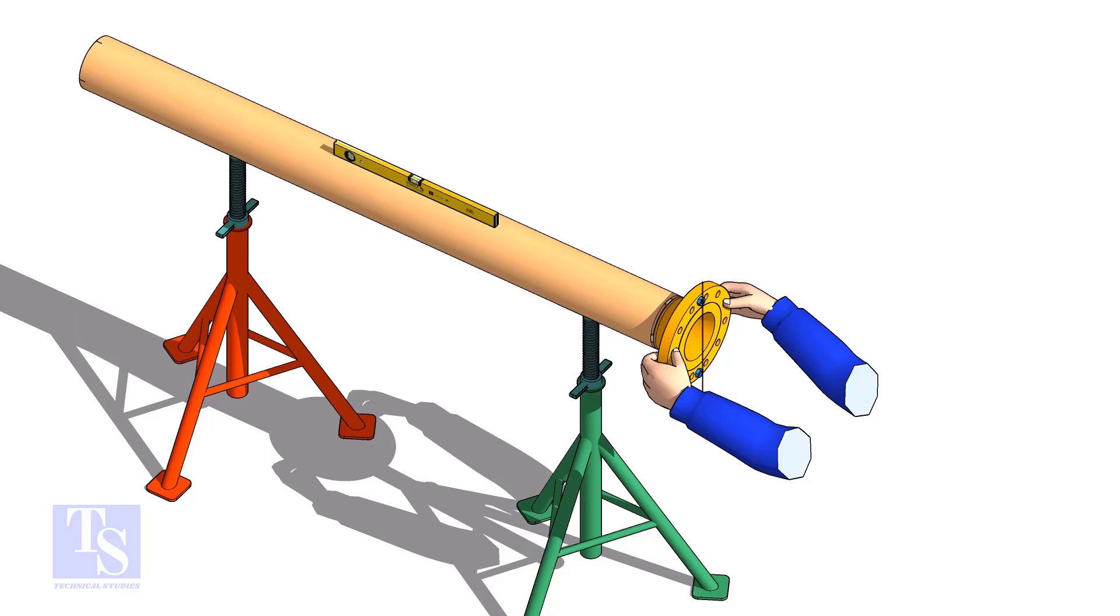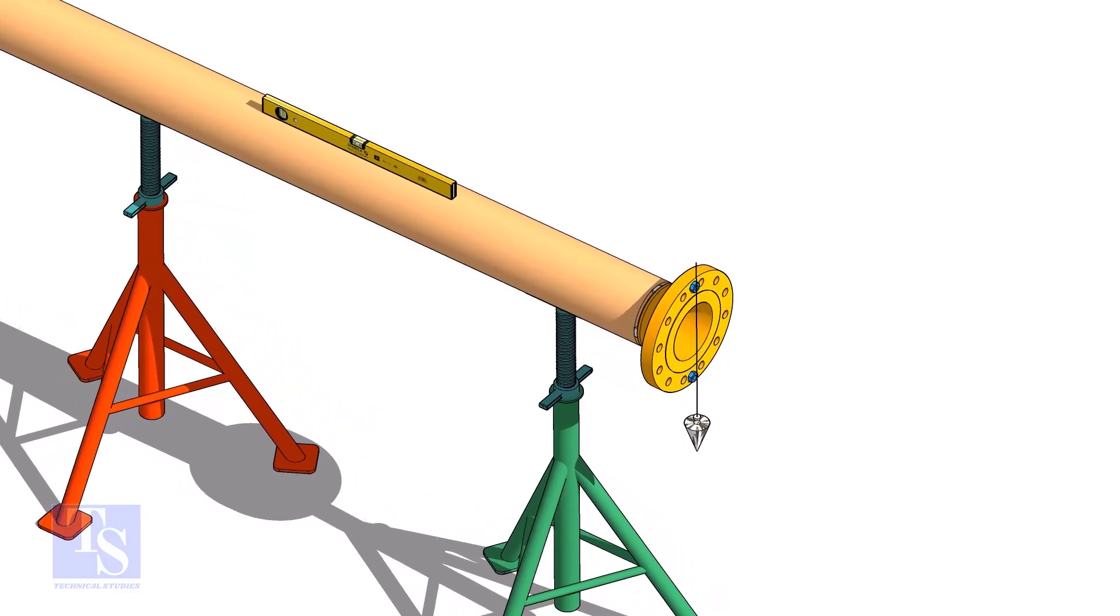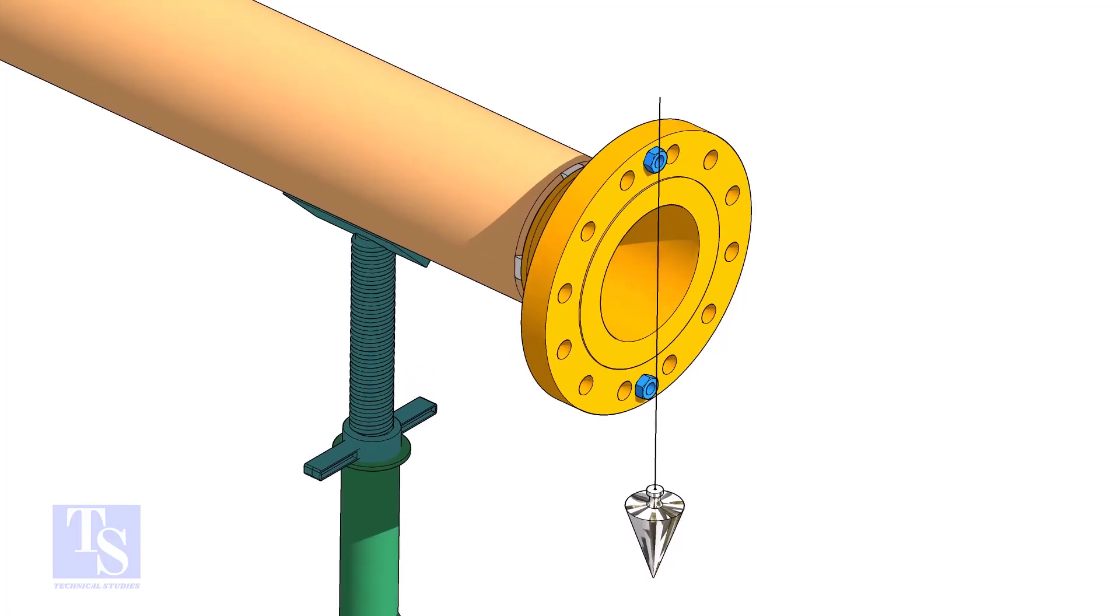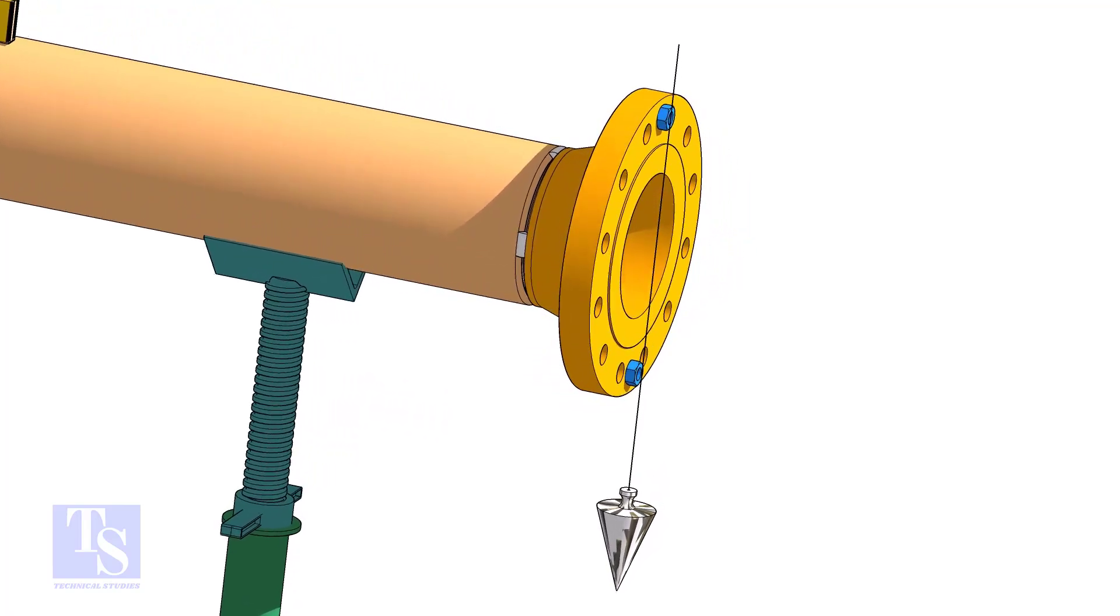In this method, let us learn how to fit up a flange with a pipe using a plumb. Level the pipe, put a plumb through the center of the flange on a nut.